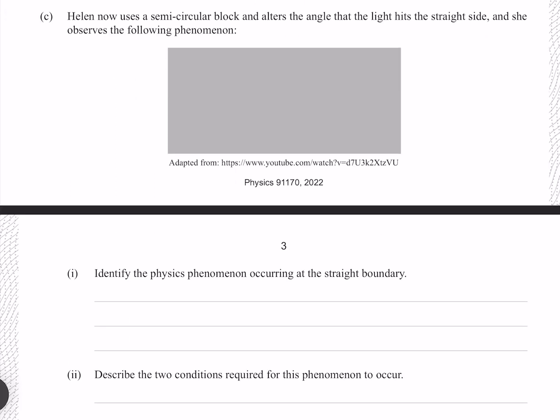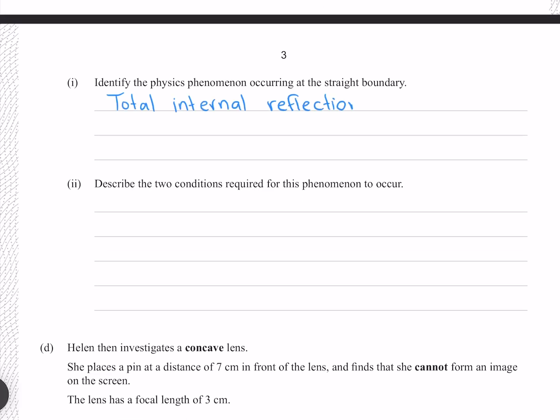Helen now uses a semi-circular block and alters the angle that the light hits the straight side, and she observes the following phenomena. Judging from the video at this link, I'm going to guess that the image that was here was going to look something like this, where we have our light ray entering the glass block, reflecting off the glass air interface, and then exiting the glass block again. This physics phenomenon is called total internal reflection.